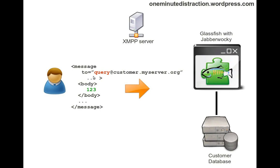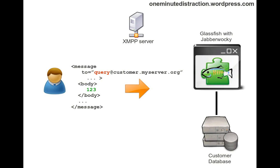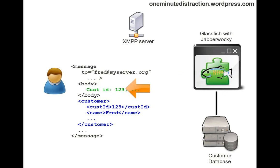When the user sends this message to the query service, the body of the message contains the customer ID that the user wishes to query — in this case, customer 123. So the user is sending a message to the component to retrieve the record of customer 123. Once the component has received the message, it will use JPA to send the query down to the database. When the database finds the record, the component will return the result back to the user.